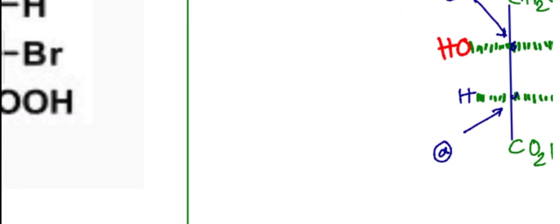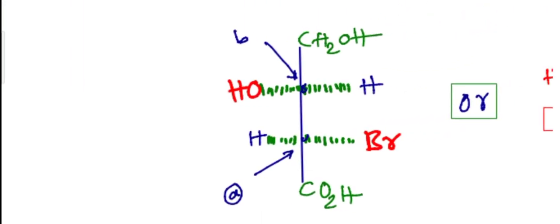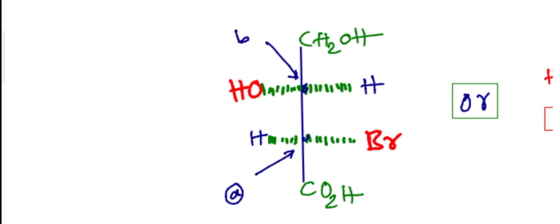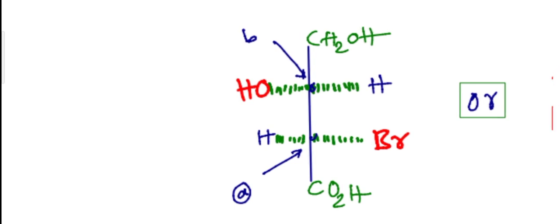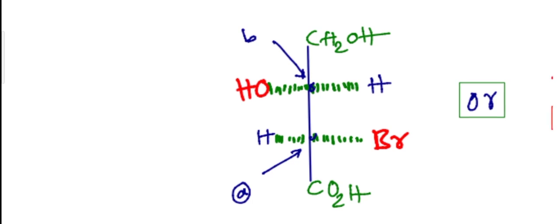All of you are aware that Fisher projection is a type of model or projection where we can convert a three-dimensional molecule into two dimensions. There are two types of lines: vertical line and horizontal line.